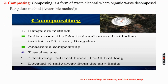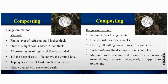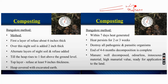Composting is a form of waste disposal where organic waste decomposes. There are two methods: mechanical and anaerobic. The anaerobic method is also called the Bangalore method, developed by the Indian Council of Agricultural Research at the Indian Institute of Science. In this method, layers are introduced — the first layer of refuse is about six inches thick, followed by formed manure composting material, then two inches of night soil, and then alternating layers of night soil and refuse.